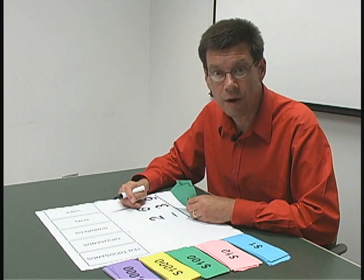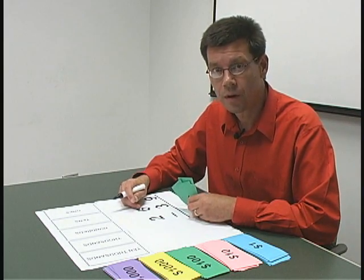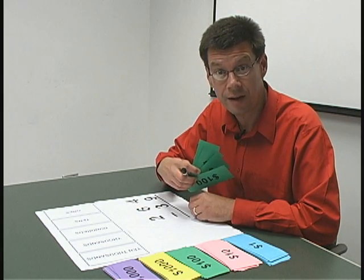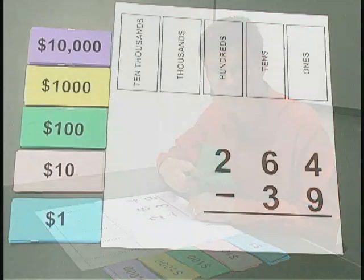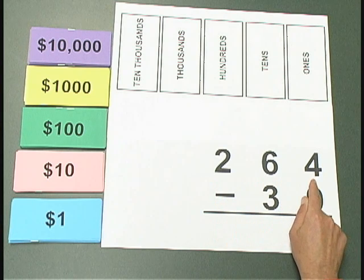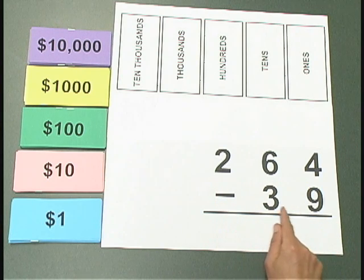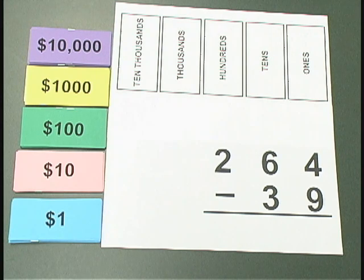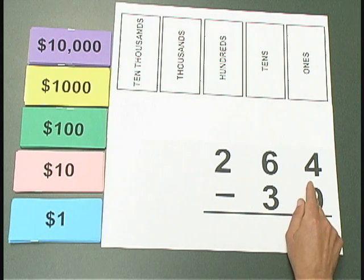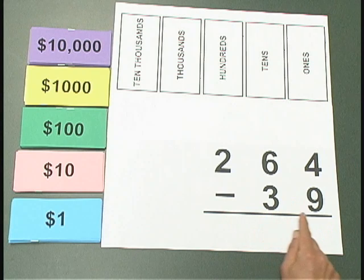Let's take a close look at the process of subtraction. We're going to use plain money to help us think about the numbers involved. The first problem we're going to look at is 264 minus 39. We're going to think of this as a subtraction problem involving money — we have $264 take away $39.